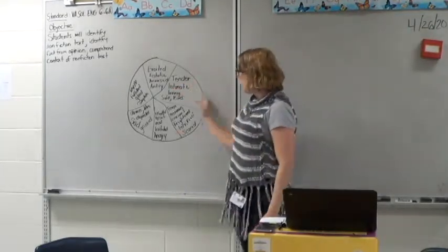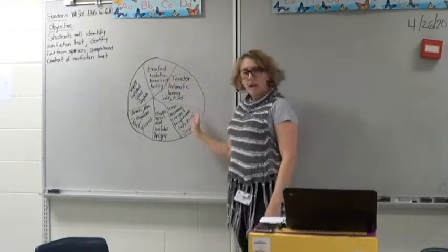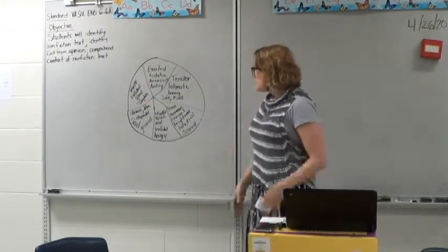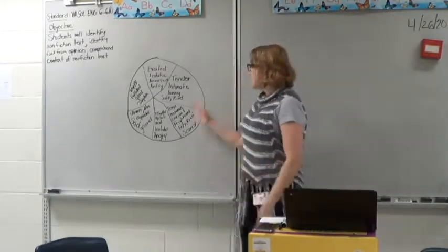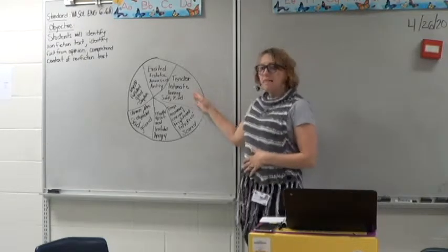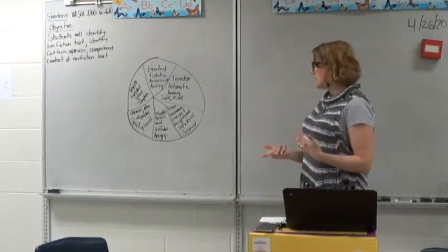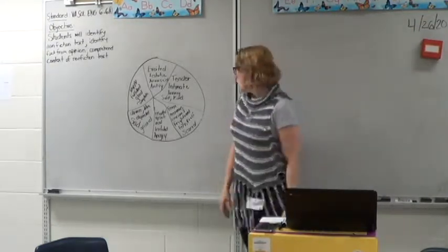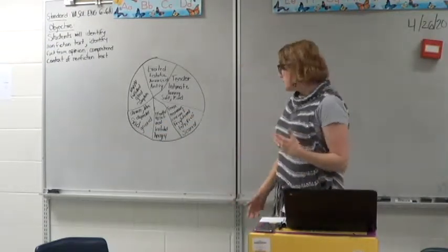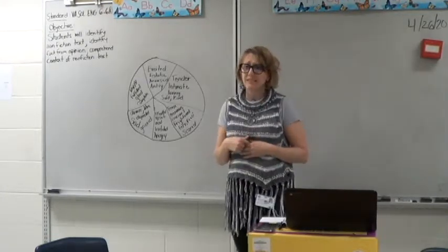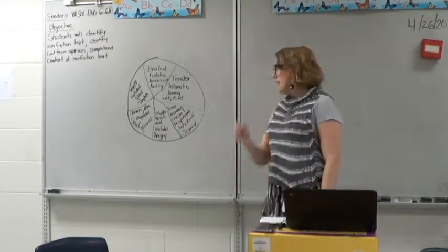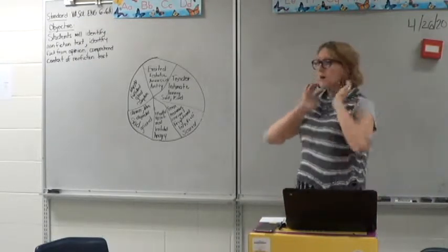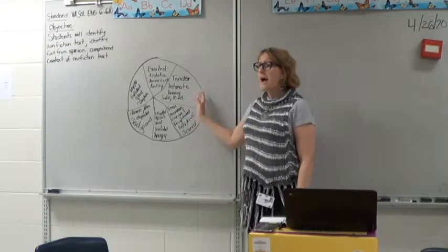On the board here is a pinwheel, and each section has a vocabulary word as well as other words to describe that same one. For instance, happy could be described also as fulfilled, glad, complete, whereas tender or feeling soft emotions could be loving, intimate. Scared can be described as tense, nervous, anxious, frightened, terrified. Sad could be described with words interchangeably such as grieved, dejected, down, or blue. Angry could be described as feeling resentful, upset, mad, irritated, or agitated. So as you see in this pinwheel, there are many words that can be interchangeable.